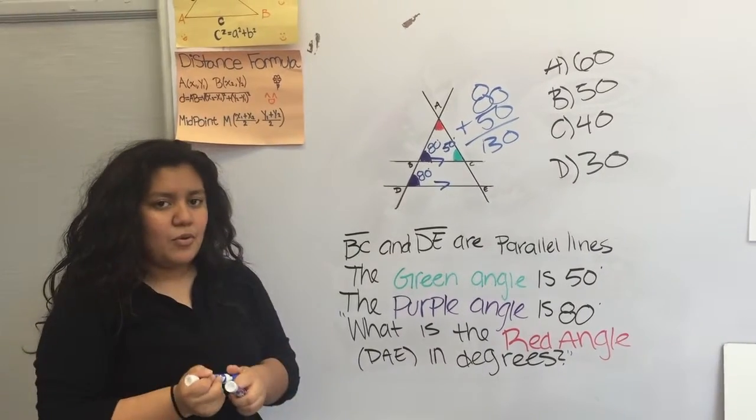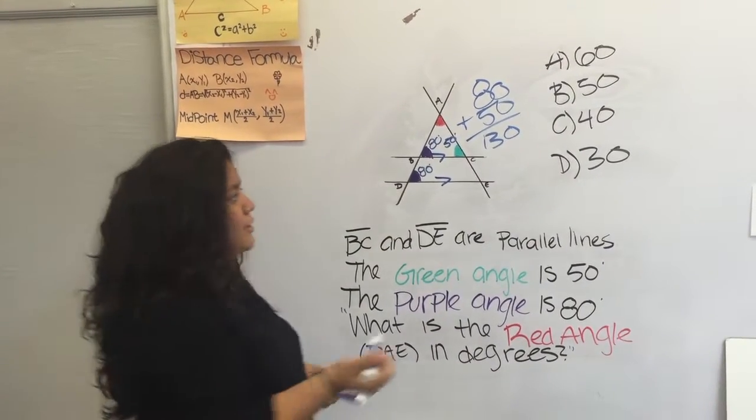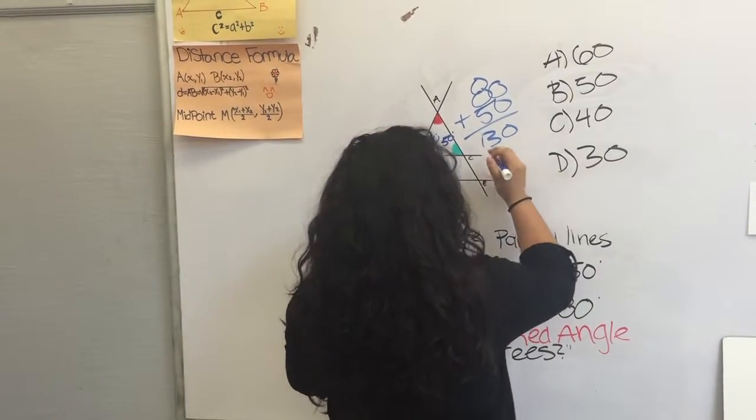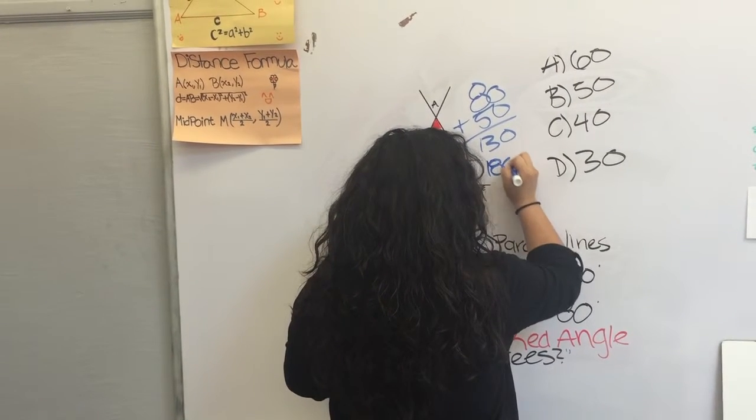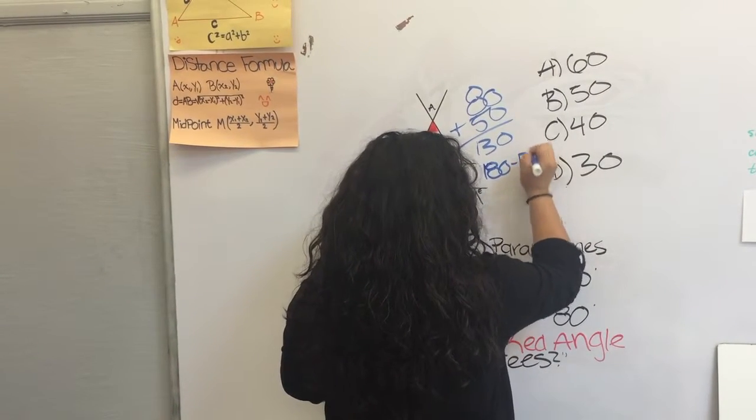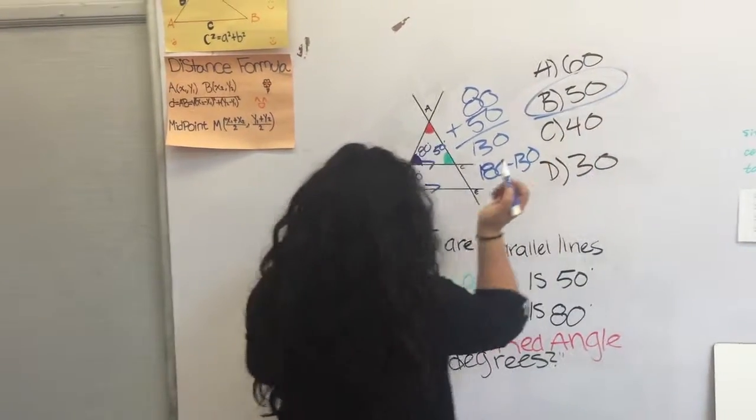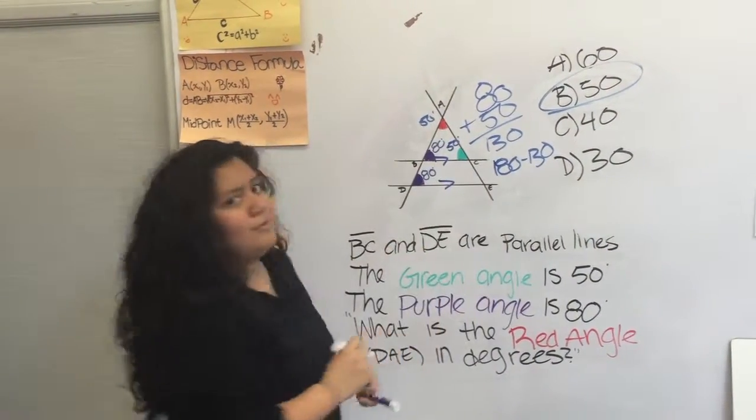Which gives us 130. So now we subtract 180 minus 130 to get the measure of the red angle. And that gives us 50. So our answer is 50 degrees for the red angle. Thank you.